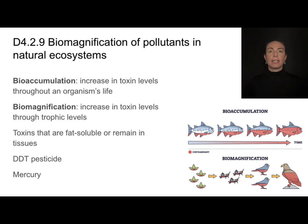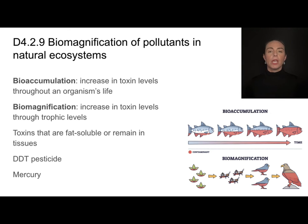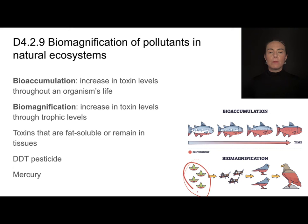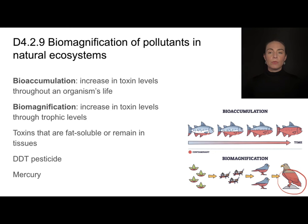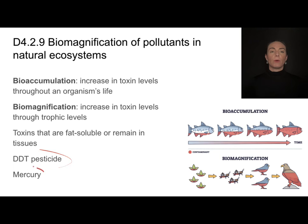Biomagnification is a process that accumulates toxins through trophic levels, not within an organism's lifetime. Because of the loss of most energy and oxidizable carbon compounds, organisms at a consumer level have to eat many more producers, and then the next level has to eat many more of those, and so on. Those toxins then accumulate due to eating individuals that also have toxins stored in their tissues. For organisms at the top of the food chain, things like DDT — a pesticide — or mercury, which remain in tissues, tend to be magnified at the top of the food chain.